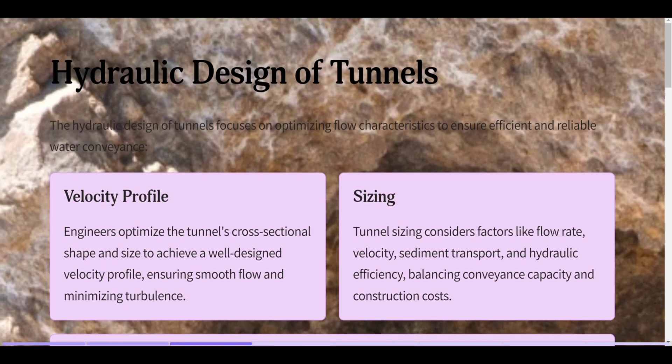Hydraulic design of tunnels focuses on optimizing flow characteristics to ensure efficient and reliable water conveyance. Engineers optimize the tunnel's cross-sectional shape and size to achieve a well-designed velocity profile, ensuring smooth flow and minimizing turbulence. Tunnel sizing considers factors like flow rate, velocity, sediment transport, and hydraulic efficiency, balancing conveyance capacity and construction costs.